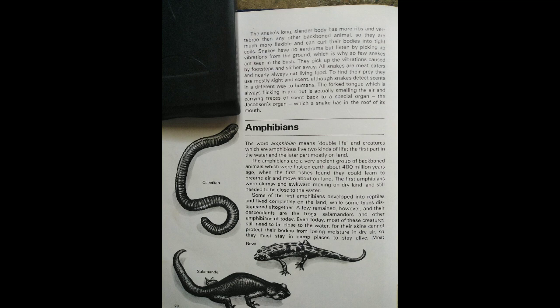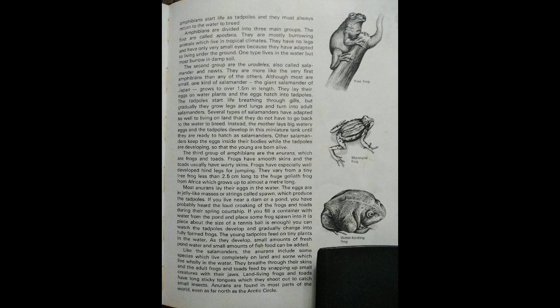Newts are terrestrial for most of the year and become aquatic in the breeding season. Salamanders may be terrestrial, aquatic, semi-aquatic, or arboreal. The tree frog is characterized by fleshy discs on the ends of its fingers and toes. The female marsupial frog carries its eggs in a pouch on its back. The water-holding frog of Australia can store water in its bladder and so survive long drought periods.